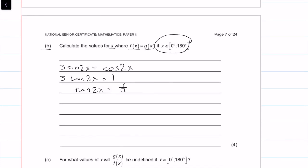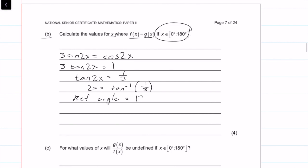Then I'm going to take inverse tan of that. So I'm going to say 2x is equal to tan inverse of 1 over 3rd, and that gives me an angle which I'm going to call my reference angle. And if I plug that into my calculator, that gives me 18.43 degrees.